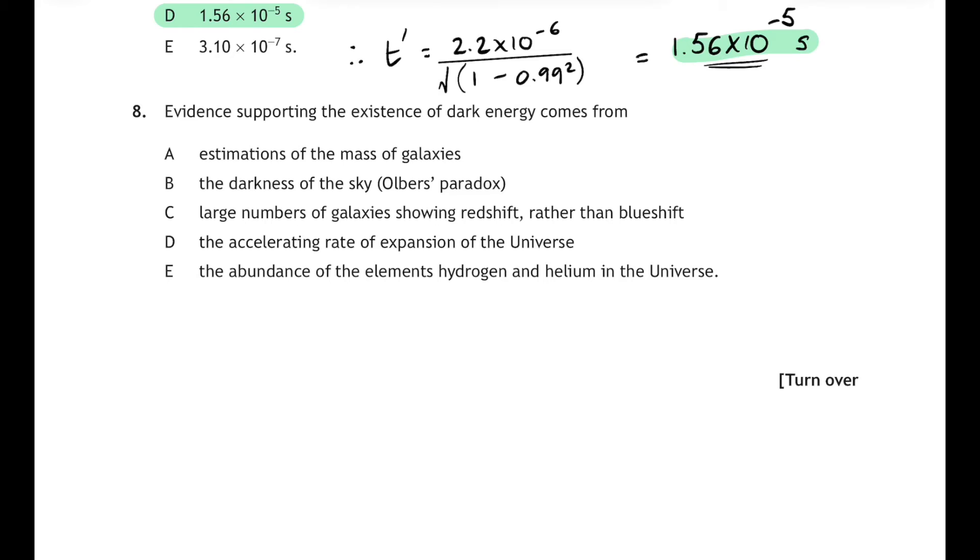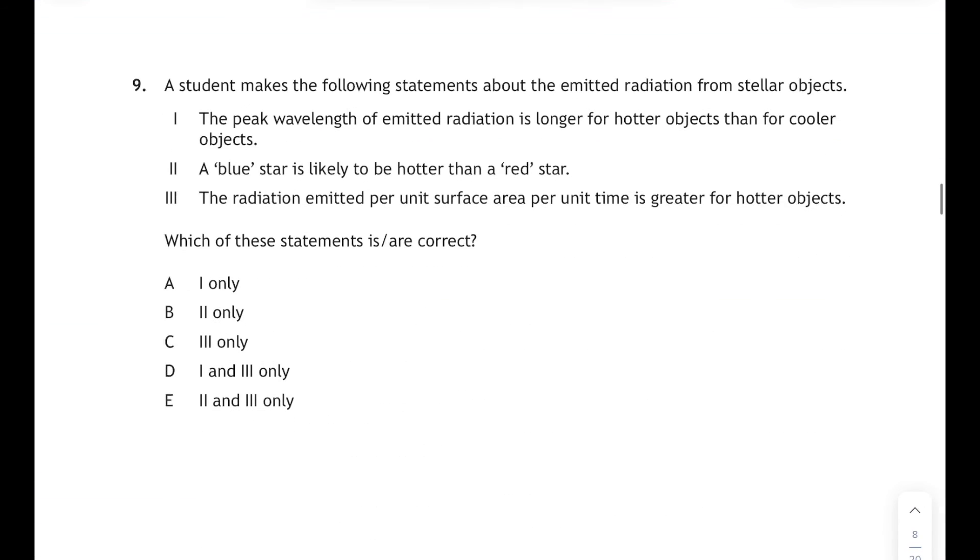Question 8. Evidence supporting the existence of dark energy comes from... well is it estimation of the mass of galaxies? Nope, that would be dark matter. Is it the darkness of the sky? Nope, that's evidence the universe had a beginning. Is it large numbers of galaxies showing red shift rather than blue shift? Nope, that's just evidence that the universe is expanding. And D, the accelerating rate of expansion of the universe - yes! From our observations of distant galaxies not only are they moving away from us but they're moving away from us at an increasing rate, and dark energy is the name that's given to the source of this accelerating expansion of the universe. That's 8D then.